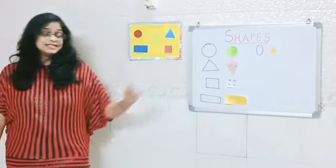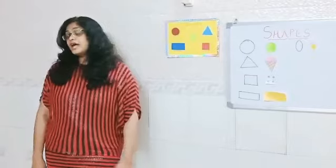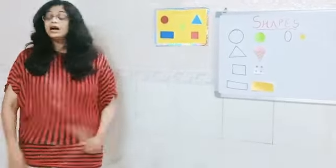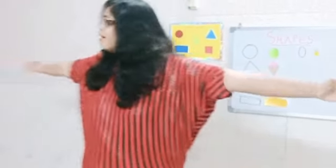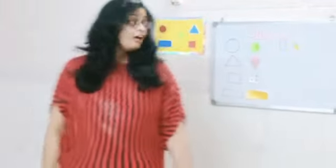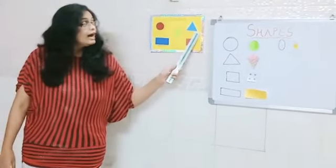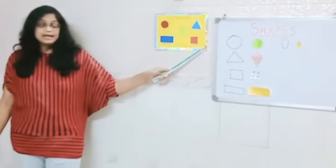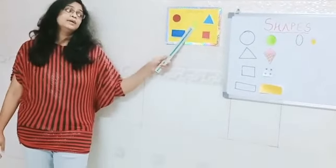So those are the shapes we have learnt today. We are shapes and we are everywhere. Just look around and we are everywhere. I am a square. I am a circle. I am a triangle. I am a square. I am a rectangle. I am an oval.